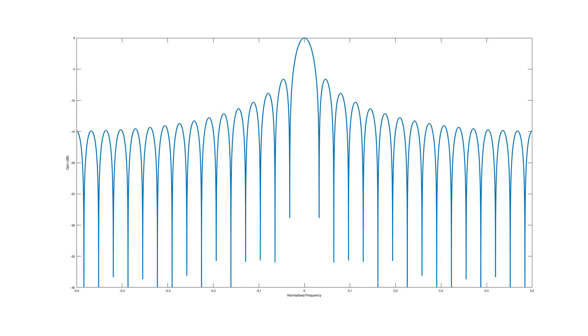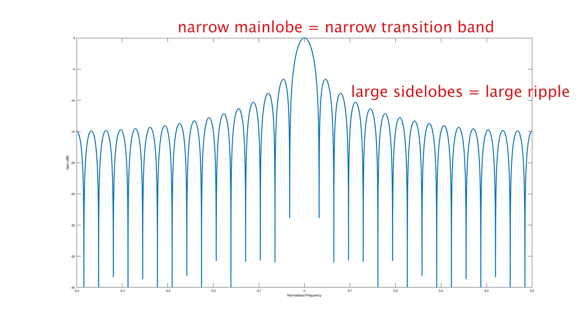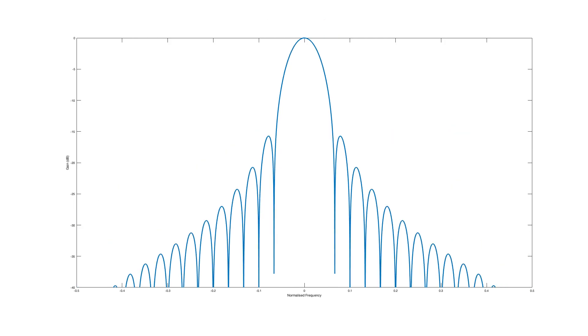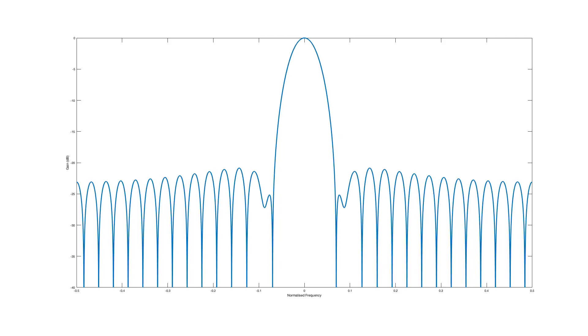The standard rectangular window has a decently narrow main lobe, but it also has large side lobes which confer quite a bit of ripple in the pass band and stop band. The triangular window has a larger main lobe width than the rectangular window, but the side lobes confer much larger attenuation. Then we have our Hanning window, and finally our Hamming window, which has an even stronger side lobe attenuation than any of the other windows. Basically, you choose the window function based on how much ripple you can afford, and then take as many samples as needed to shrink that transition band to your specification.